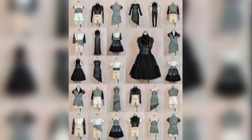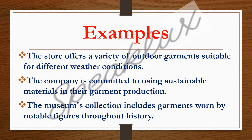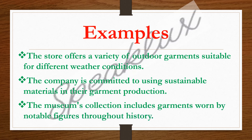Let's see some sentences for garment. The store offers a variety of outdoor garments suitable for different weather conditions. The company is committed to using sustainable materials in their garment production. The museum's collection includes garments worn by notable figures throughout history. So when you are talking about garment, you are talking about only one category of clothes.